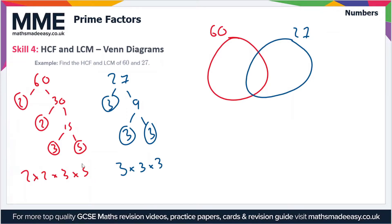If any numbers are shared between 60 and 27, they'll go in the intersection. The 2 just goes in the 60 circle, because there are no 2s in the prime factorization of 27 — so we'll cross off the 2. We do the same thing for the second 2.